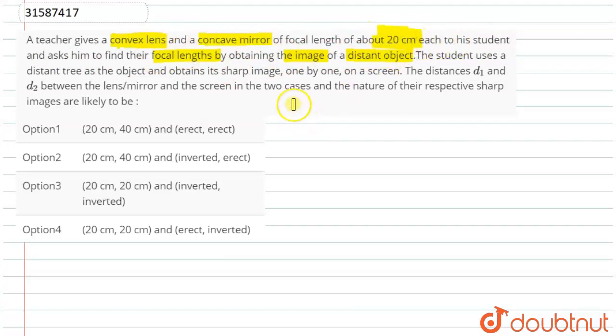We know the answer should come, but we wanted to try it experimentally to make a distant object and calculate the focal length. A student uses a distant tree as an object and obtains a sharp image one by one on the screen.